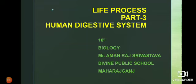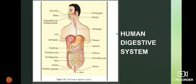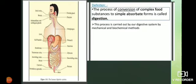Today we have discussed life processes part 3 - the human digestive system for class 10th. Before we start, we need to know what digestion is. Digestion is the process of conversion of complex food substances into simple forms. This process is carried out by our digestive system by mechanical and biochemical methods.